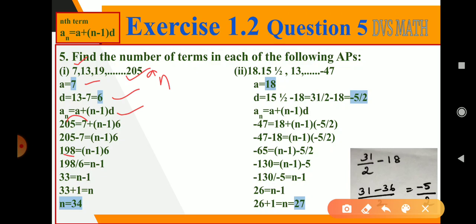So 198 divided by 6 is equal to n minus 1. If we divide 198 by 6, we'll get 33 is equal to n minus 1. Now if we take minus 1 to the LHS, it becomes plus, so n is equal to 34.